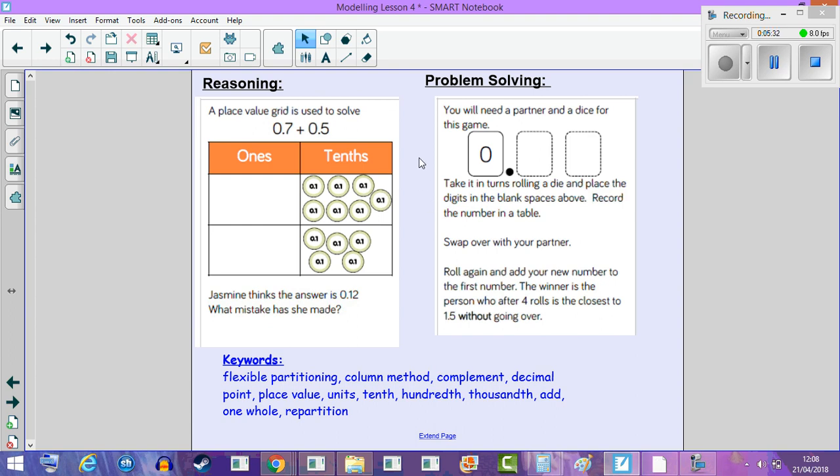In problem solving, it says you will need a partner and a dice for this game. Take it in turns rolling a die and place the digits in the blank space above. Record the number in a table. Swap over with your partner, roll again and add your new number to the first number. The winner is the person who after four rolls is the closest to 1.5 without going over.